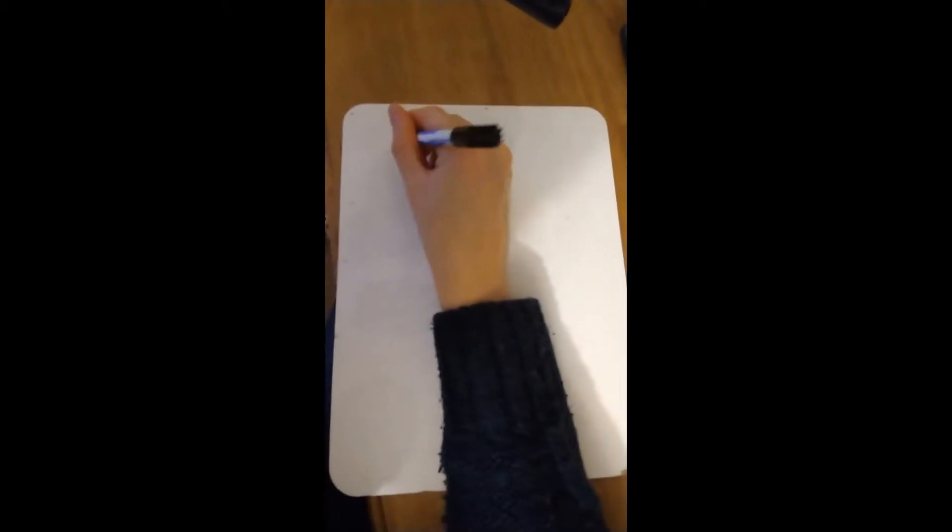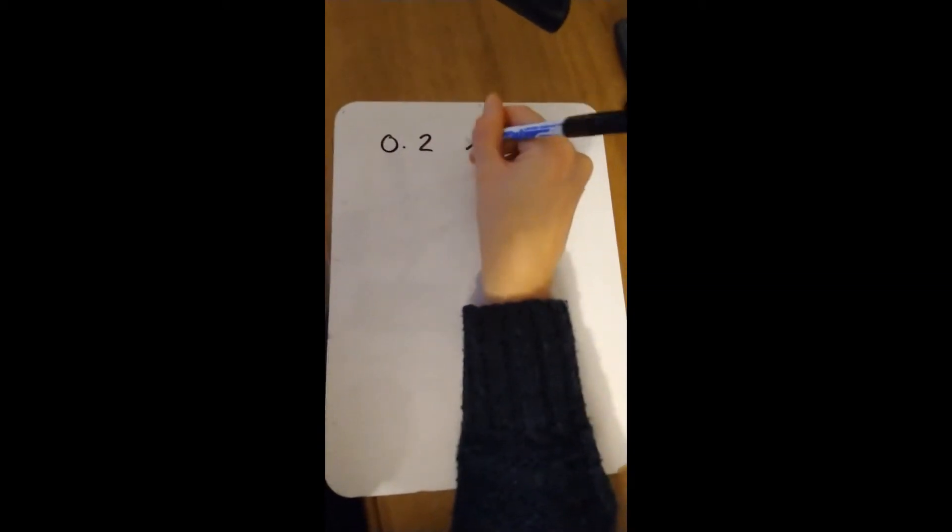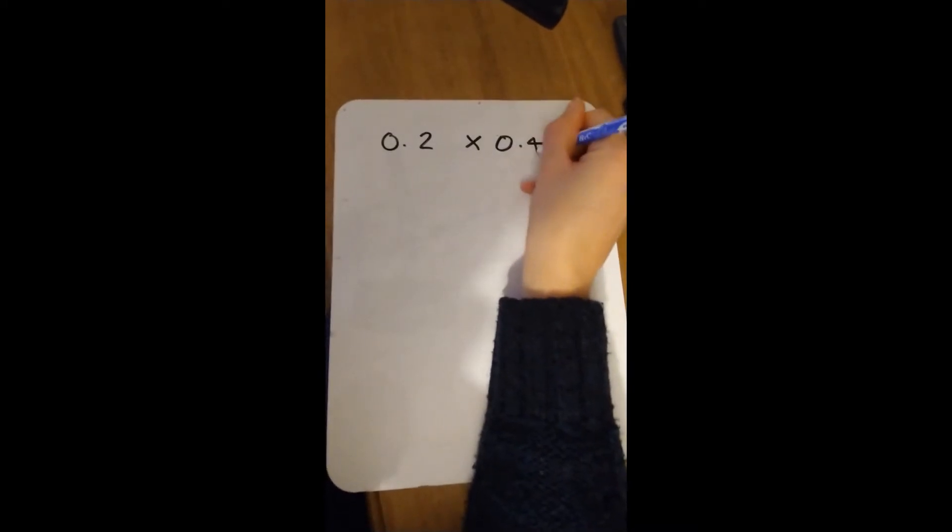Today I'm going to show you how to easily multiply decimals. Here's an example: 0.2 times 0.4.